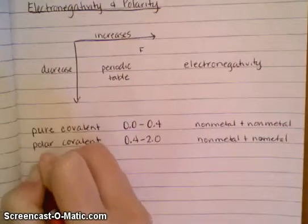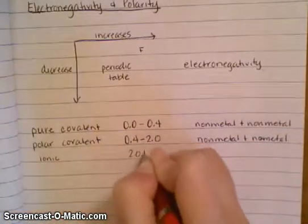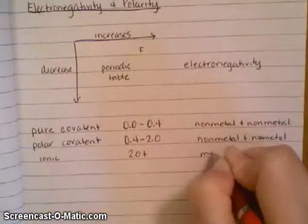Now the other option is an ionic, and as we've already learned, this is between a metal and a nonmetal.